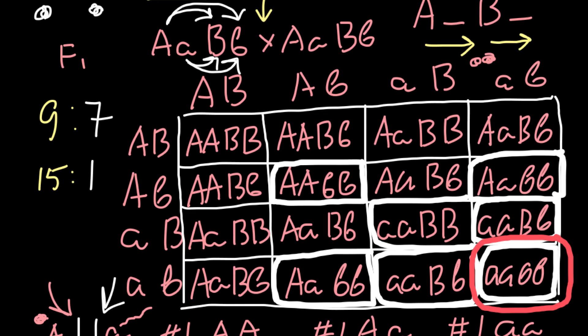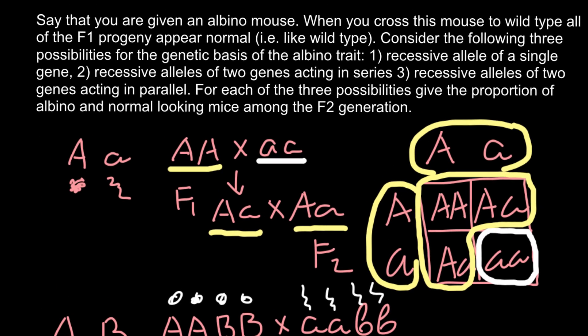We have now answered all three questions. To summarize, the F2 ratios for the three possibilities are: 3 normal to 1 albino for a single recessive gene; 9 normal to 7 albino for two genes acting in series; and 15 normal to 1 albino for two genes acting in parallel. I hope this video was helpful. Thank you for your attention. Please subscribe, give a thumbs up if you liked this video, write your comments and questions, and share with your classmates. See you in the next video!